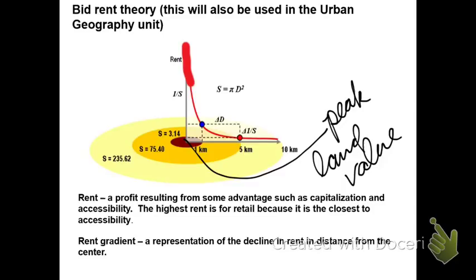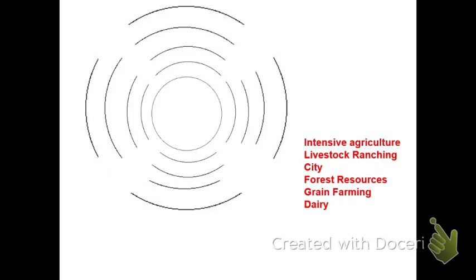When I say value, we're talking about the term rent here. This bid-rent theory — I just want you to be aware of that. So, Von Thunen's model is a series of concentric rings, and at the center of these rings we have our city. The city is found at the center — remember, this isolated state with the market in the center.